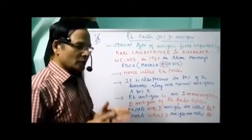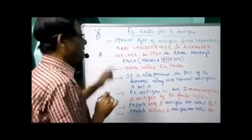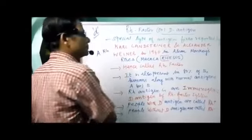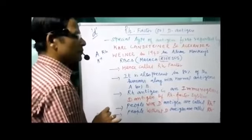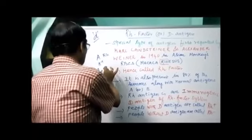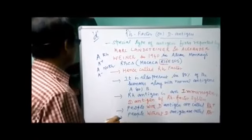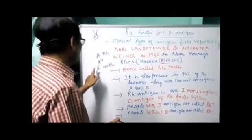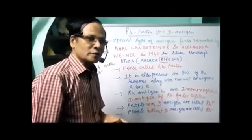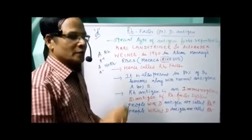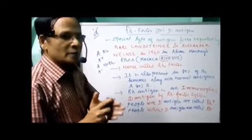This is the basis for positive and negative classification. Suppose a person with blood group A — in addition to the A antigen, if he has the Rh antigen, then he is said to be A positive. If he has A antigen but no Rh antigen, he is said to be A negative. So A antigen with Rh antigen equals A positive; A antigen with no Rh antigen equals A negative. That is why 80% of humans are positive.